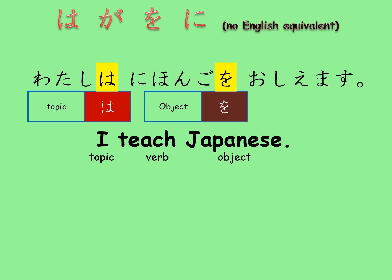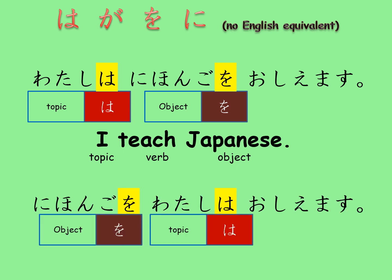In English, the order of the words shows the function of each part, so we cannot change the order around — 'Japanese teach I' doesn't make any sense. But in Japanese, we can swap them around. 'Nihongo wo watashi wa oshiemasu' also means 'I teach Japanese.' So we need particles like wa, ga, o, and ni to mark the function of each part within the sentence.